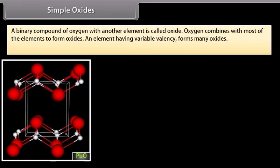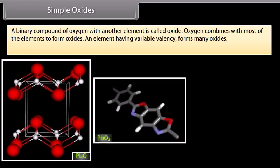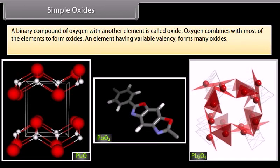Simple oxides. A binary compound of oxygen with another element is called oxide. Oxygen combines with most of the elements to form oxides. An element having variable valency forms many oxides, for example PbO, PbO2 and Pb3O4. On the basis of their nature, oxides can be classified as follows: